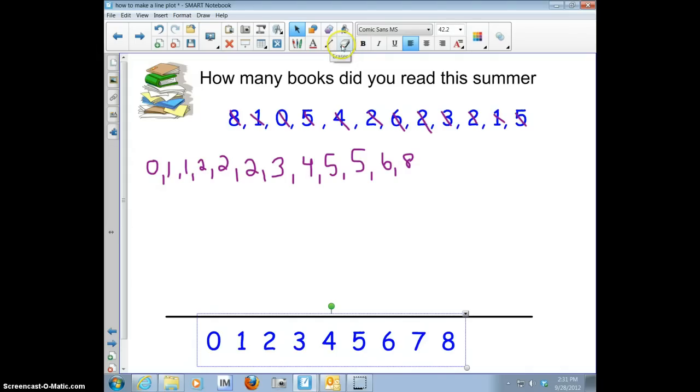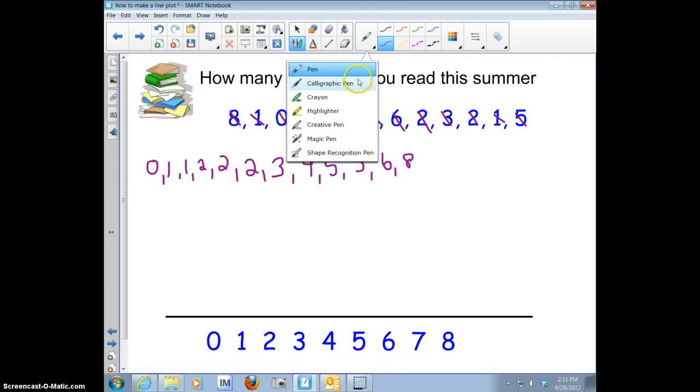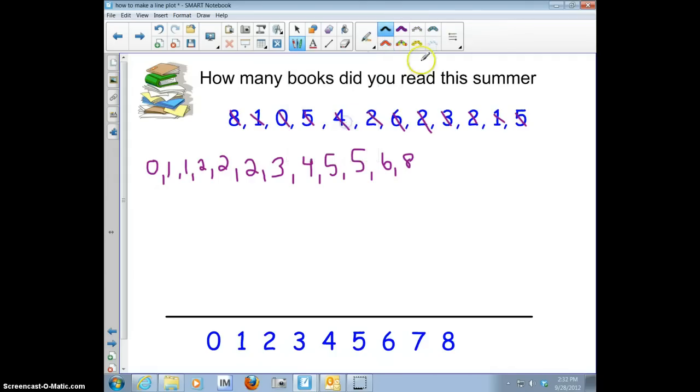So now what I'm going to do is I'm going to use my creative pen so I can get a star. So I'm going to look at this 0, and I'm going to put 1 mark over top. Then I know that I've used the 0, so I'm going to cross that off. Then I have 1, 2, 1s. So I've used those.